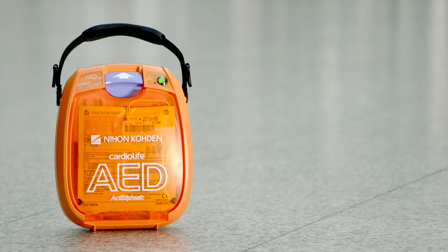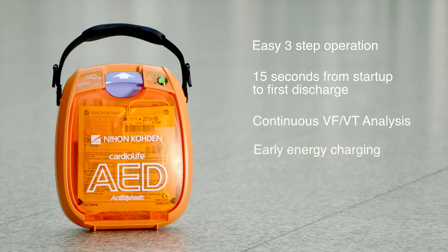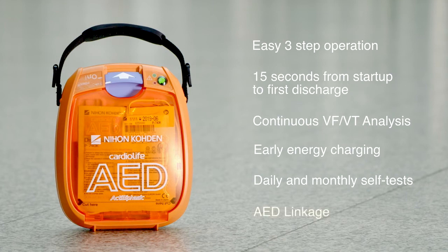Nihon Kohden Cardiolife AED 3100 features include easy three-step operation. Only 15 seconds from start-up to first discharge. With continuous VF-VT analysis, the ECG is analyzed even during chest compressions. Energy charging starts before the shock is advised to maximize CPR time. The AED 3100 performs a daily and monthly test to make sure the battery, pads and circuit are in perfect order. With the optional AED linkage remote monitoring system, you will be informed if there is anything that needs your attention. With Nihon Kohden's AED 3100, you are sure you are always ready to deliver life-saving performance when you need it.